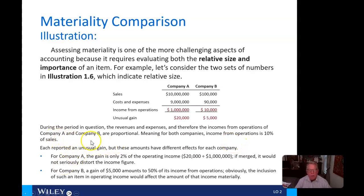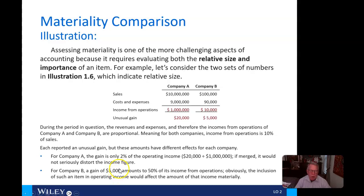During the period in question, revenues, expenses, and income from operations of Company A and B are proportional — both have income from operations at 10% of sales. Each reported an unusual gain, but these have very different effects. The gain for Company A is only 2% of $1 million, so it wouldn't seriously distort reporting. But for Company B, $5,000 amounts to 50% of its income from operations and is clearly material.